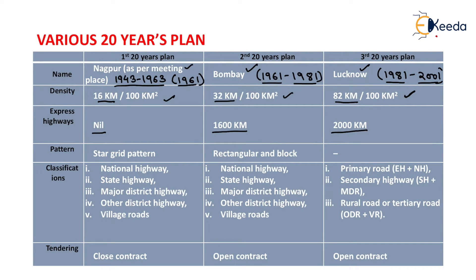The road pattern of the Nagpur road plan is the star and grid pattern. The road pattern of the Bombay road plan is the rectangular and block pattern, and the road pattern of the Lucknow road plan is the mixed pattern.